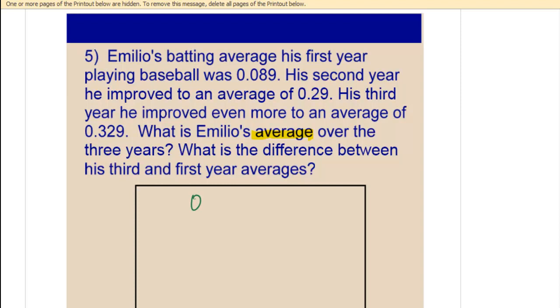So we're going to add up this number, this number, and this number. And whatever our sum is, what do we do? Divide by how many numbers we have, which is three. So you can figure that out.